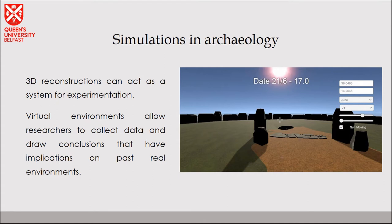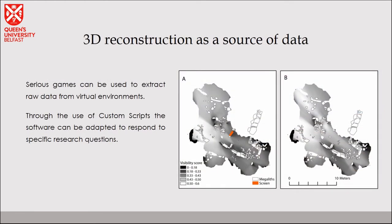3D reconstructions are a great system for experimentation. They possess some kind of physicality, which means they can act as a system with variables that you can change and adapt in order to get conclusions — new raw data that can be used to better understand the archaeological context. This new data, these new conclusions, have actual applications in the real archaeological evidence. The use of custom scripts — pieces of software written specifically to answer specific questions — can help us answer research questions with more data.